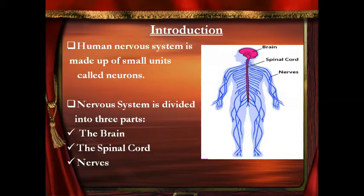Let's start with the nervous system. The human nervous system is made up of small structural units called the neurons. These neurons are millions in numbers that are found all over our body. Neurons are transferring the messages from the brain and spinal cord to the different body parts, and from the different body parts to the brain. The whole nervous system is divided into three parts: the brain, spinal cord, and nerves or the neurons.